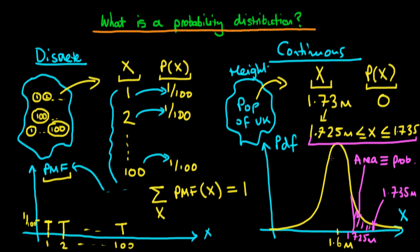The PDF organises probabilities — it shows that it's much more likely an individual's height is between 1.59 and 1.61 metres, represented by the large central area, than between 0.9 and 1 metre. It provides a hierarchy of probabilities. In that sense it's similar to the discrete case, but in the continuous case you must think in terms of ranges, not individual values — any single exact value always has probability zero.